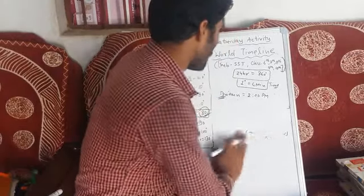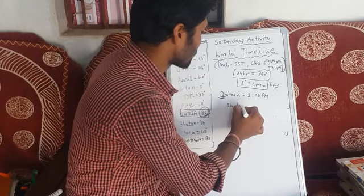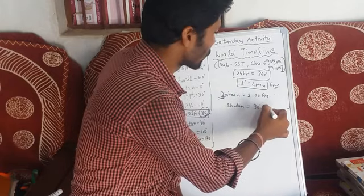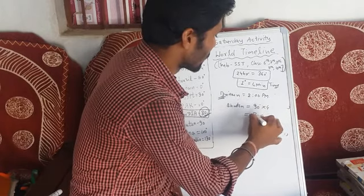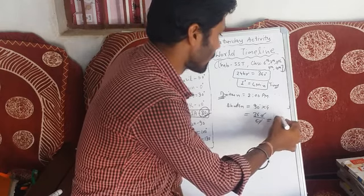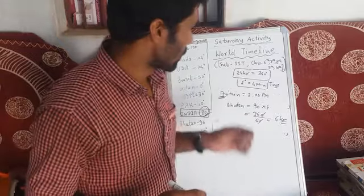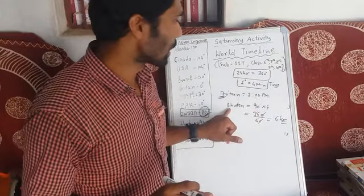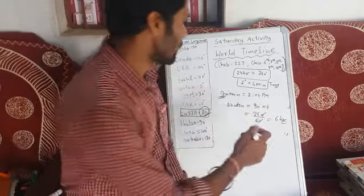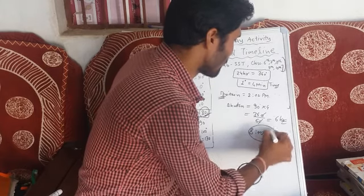Suppose we want to calculate the time of Bhutan. Bhutan is located at 90 degree longitude. So we multiply by 4, giving 360 minutes, and dividing by 60 gives 6 hours. So when Britain's time is 2 o'clock, Bhutan's time is 2 plus 6 hours: 3, 4, 5, 6, 7 and 8 — so 8 PM at night.